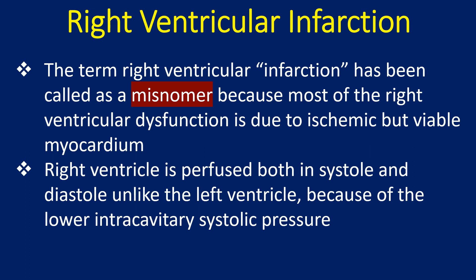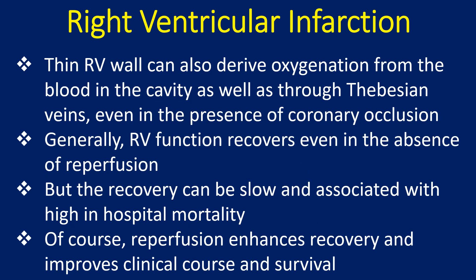The right ventricle is perfused both in systole and diastole, unlike the left ventricle, because of the lower intracavitary systolic pressure. The thin RV wall can also derive oxygenation from blood in the cavity as well as through thebesian veins, even in the presence of coronary occlusion.